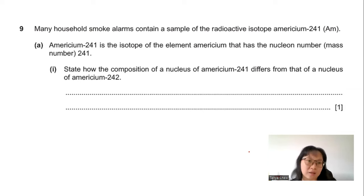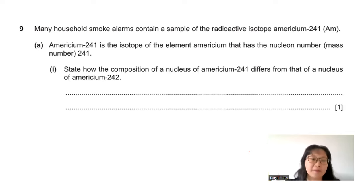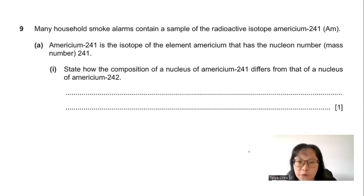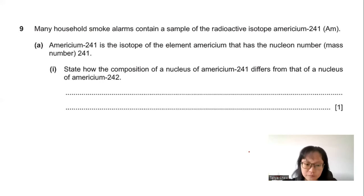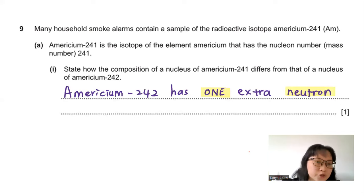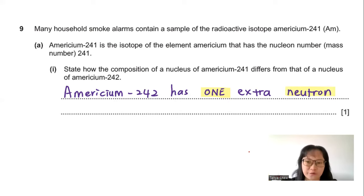Question 9: Many household smoke alarms contain a sample of radioactive americium-241. Part A: Americium-241 has a mass number of 241. State how the composition of a nucleus of americium-241 differs from that of americium-242. Since they are isotopes, the number of protons is the same. Americium-242 has one extra neutron compared to americium-241.